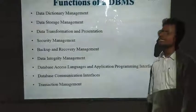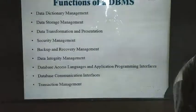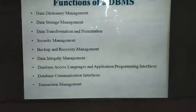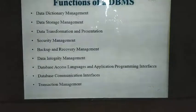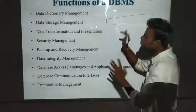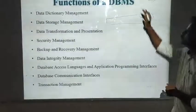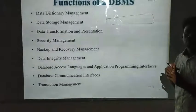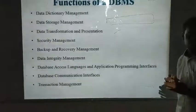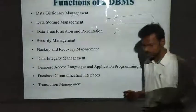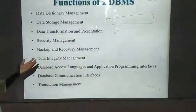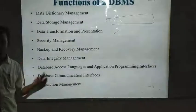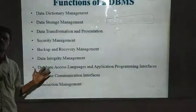The next function is data transformation and data presentation. We will have many users using the data in different ways. This function is used for transforming the data in such a way that it conforms to the required data structure — meaning if you want to receive data in a particular format, you can do so using the database management system. The transformation is confirmed so that data is given in that particular physical structure. Regarding presentation: if you are using a mobile device, a laptop, a desktop, or a big screen, there will be an appearance difference.